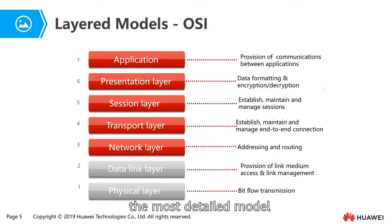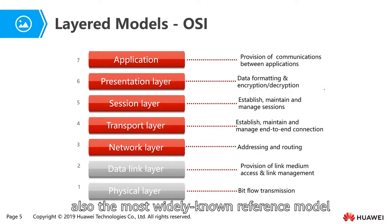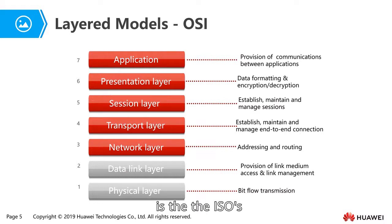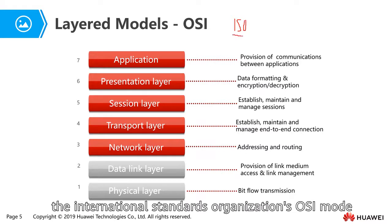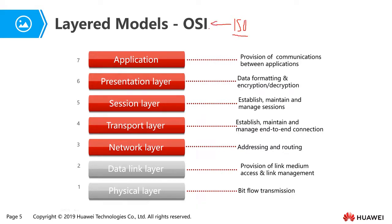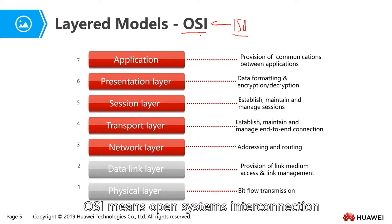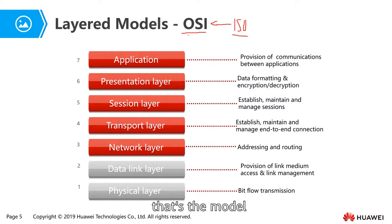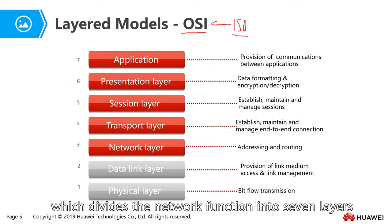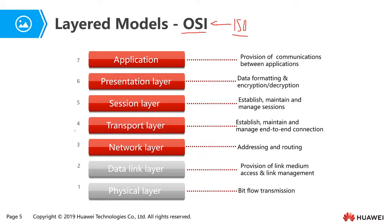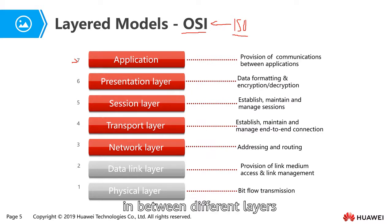The most detailed and widely known reference model is ISO's OSI model — the Open System Interconnection model. This model divides the network function into seven layers, from layer one to layer seven.